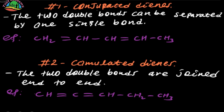Conjugated Dynes means the two double bonds are separated by one single bond. When two double bonds are separated by one single bond, it is called Conjugated Dynes.